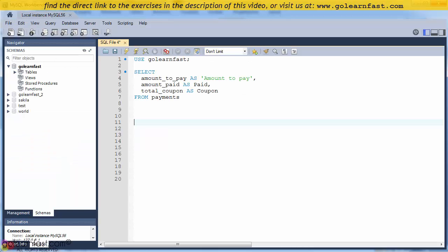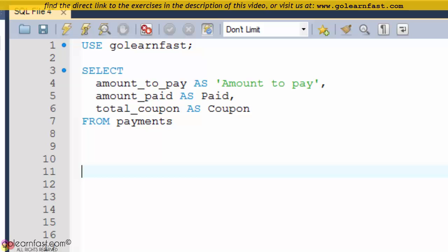This is another SELECT statement that renames the columns in the result set. Here, the statement creates an alias of amount to pay for the amount to pay column.